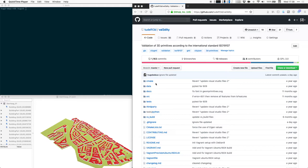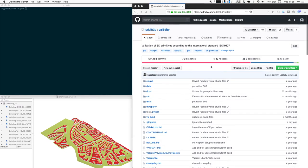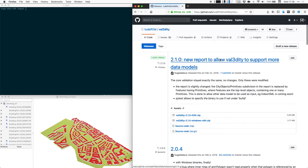The source code of Val3dity is available on GitHub, but you don't need to compile the source code yourself. You can simply download one of the binary. So if you click on release, you can see that we have binaries for Windows and for macOS. So if you download the binary for your operating system, then you can run it directly.